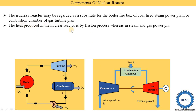The heat produced in the nuclear reactor is by the fission process — the process carried out in a nuclear reactor is called the fission process. In a steam and gas turbine power plant the heat is produced by the combustion of fuels: we burn fuels and the heat released is used to heat the working fluid. In a nuclear reactor the fission process is carried out, and due to the fission process heat is released and utilized to heat the working fluid.